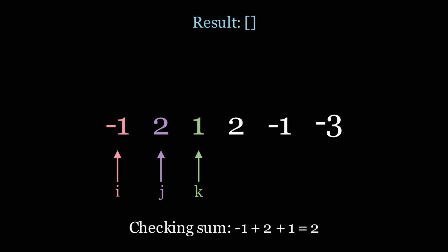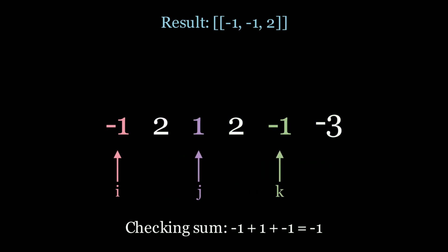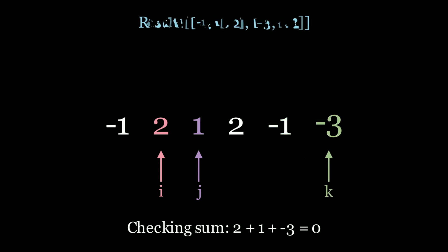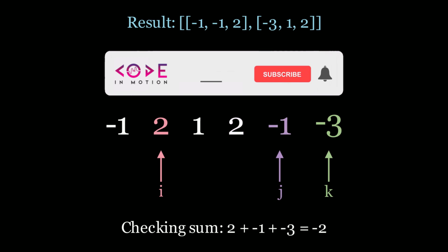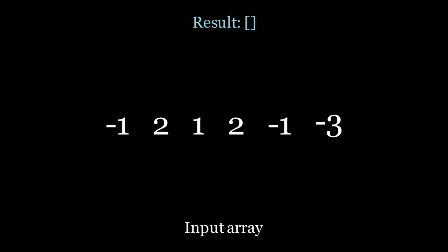With any LeetCode problem, you always want to start with the brute force solution to get something on paper and a working algorithm. After you analyze the time and space complexity, that's when you think about a more optimal solution. The brute force here uses a triple for loop — O(n³) time complexity — iterating i, j, and k pointers to look at every single triple pair and check if they sum to zero. The question is: can we beat O(n³)? We should think about n log n or n squared, which are better than n cubed.